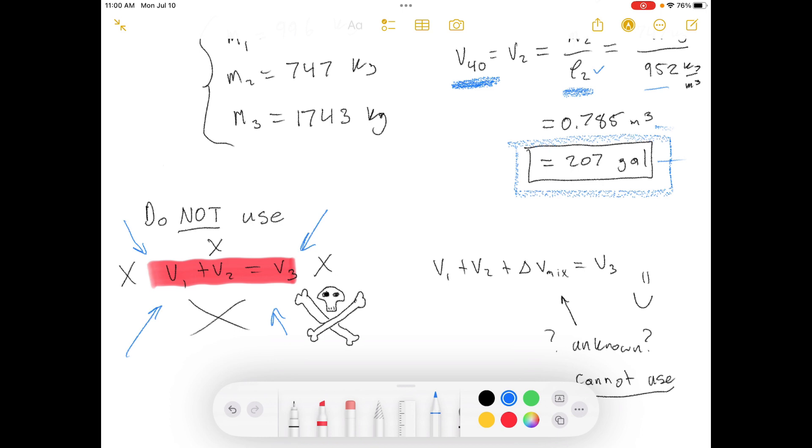So if you pour the water into the gravel, the water level will rise, but it will fill in all the little cracks and empty spaces in between the large chunks of gravel. So the water doesn't just get added right on top of the gravel, and so you can't say that the two volumes end up equaling each other if you just add them together.